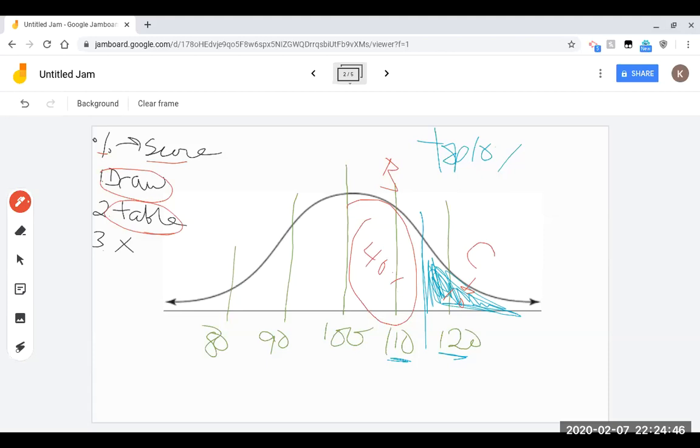Then once we found that Z-score, we're going to plug it into this equation here. It's X equals mu plus our Z-score times our standard deviation. So really the piece that we need, we have all the pieces that we need, is we just need to find our Z-score. So let's go ahead and do that now. Let's pull up our table and see if we can find a Z-score associated with the top 10%.